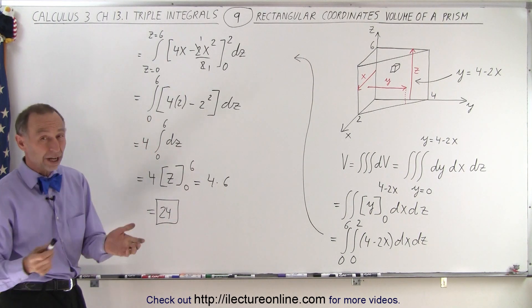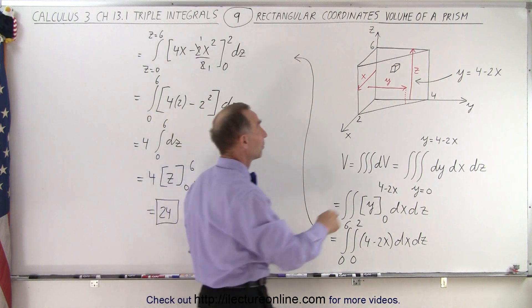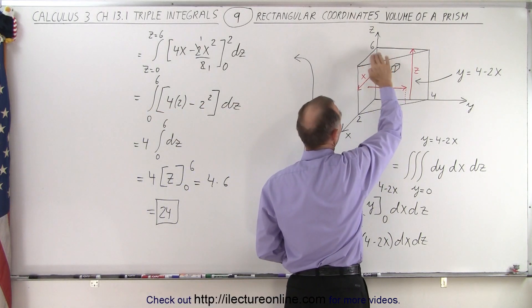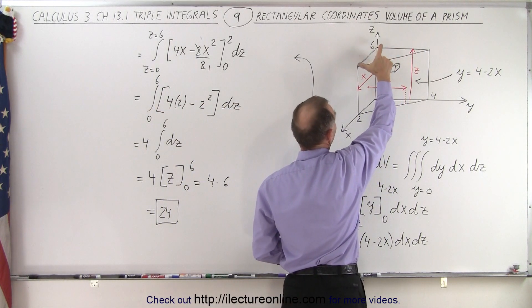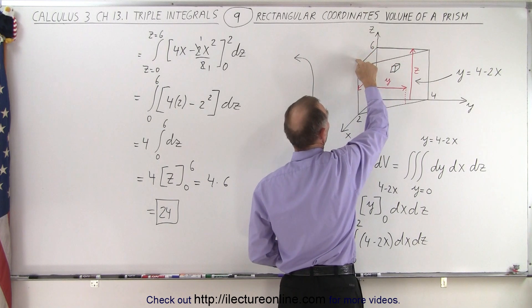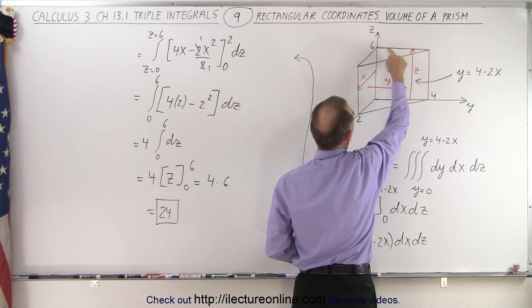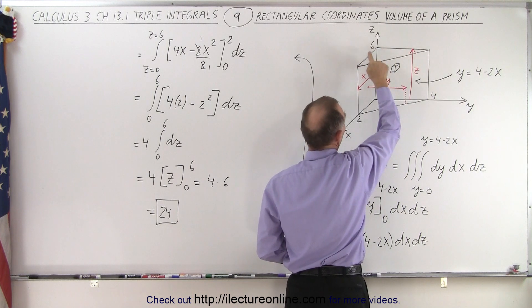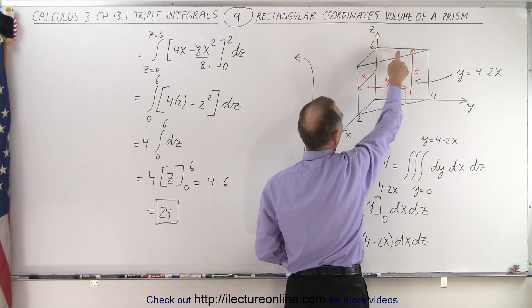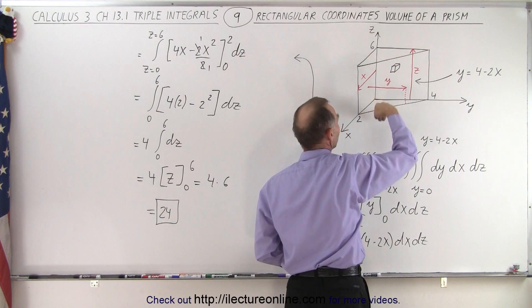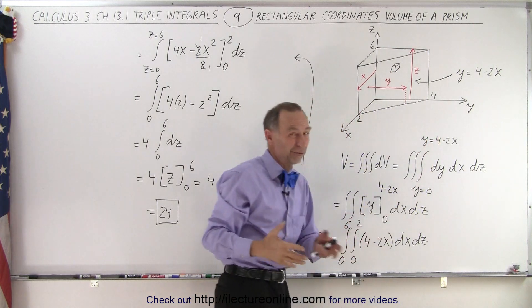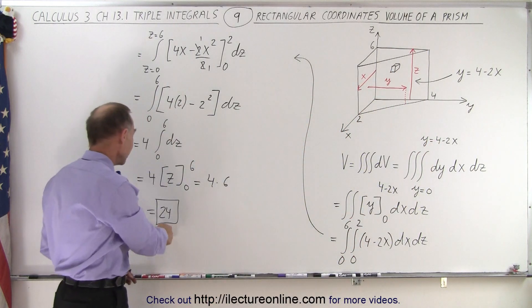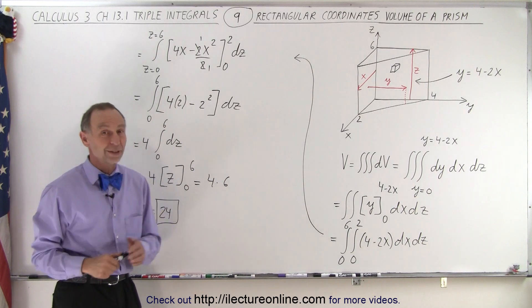And of course you can quickly check. Notice that this is a triangular-shaped prism at the top. If we want to find the area at the top, this is 2 by 4 times a half. So that would be the area of a triangle. That would be half times 2 times 4, which is 4, times the height which is 6. 4 times 6 is 24. So very quickly we could have figured out indeed that the volume is 24.